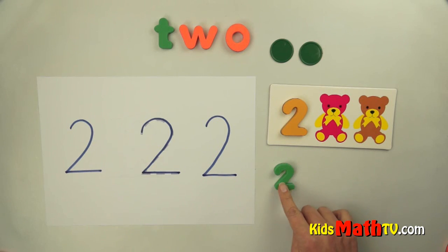Here's a green two. Another two. A red two. And there's a two. These are all the number two.